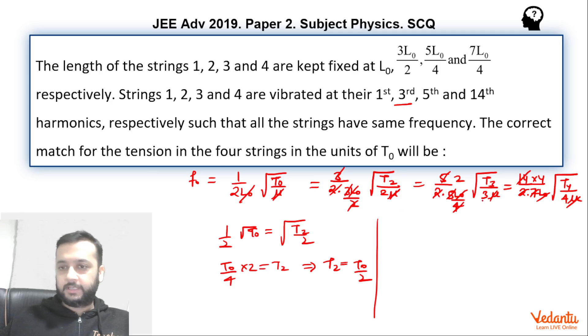Now if we talk about T3, if you see the original equation and square it, we get T0 upon 4 equals 4 T3 by 3. So T3 becomes 3 by 16 T0.